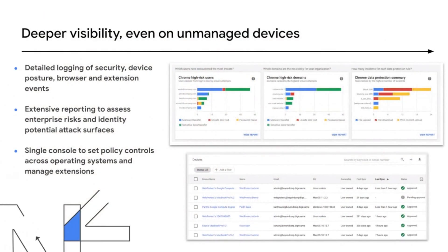Taking it a step further — making this practical and operational for the enterprise — we've also looked at how to provide visibility. Leveraging our foothold with Chrome browser, we're able to provide visibility into the devices, users, what activity is being generated, and what actions are being taken in events, as a function of both our data controls and threat-side controls. All of this is provided in a rich reporting format, so that the same visibility you'd want for managed devices is now also available for unmanaged devices.